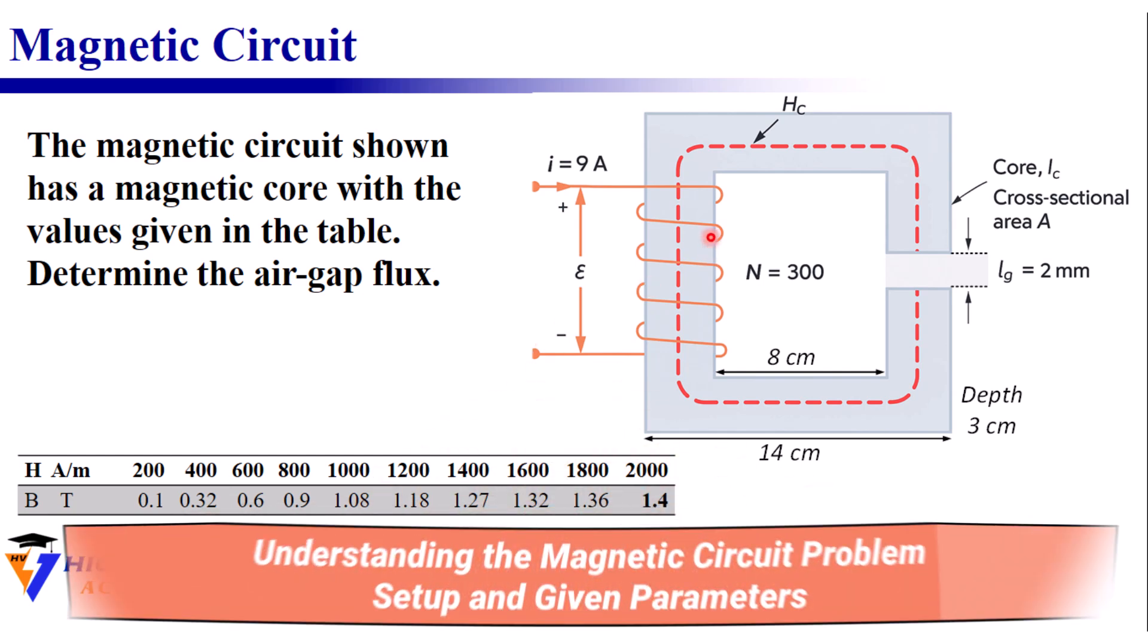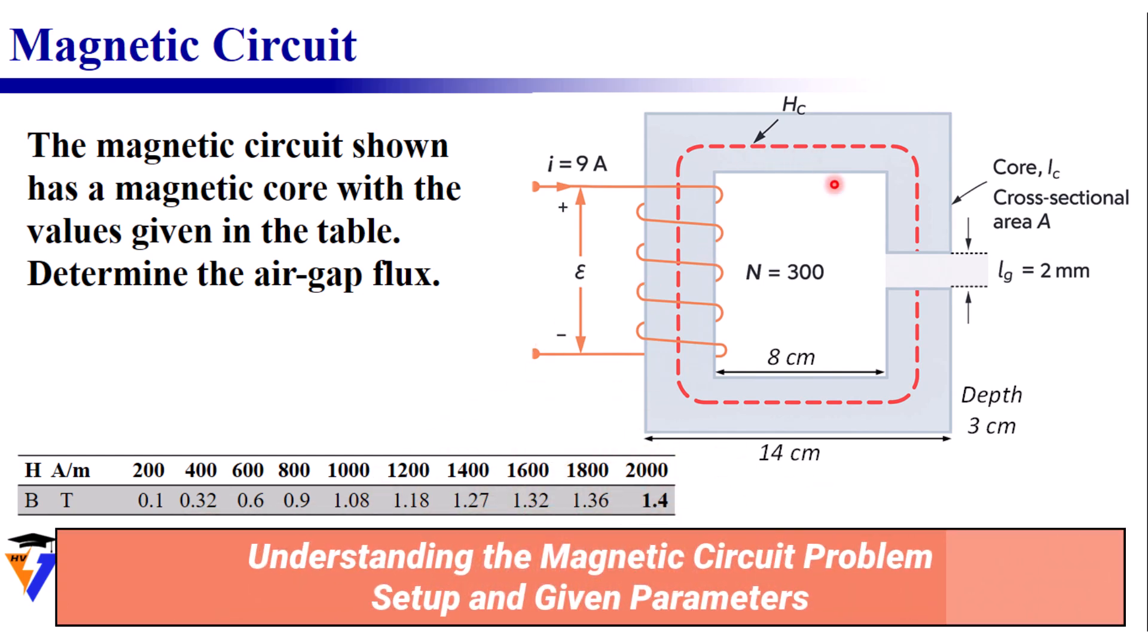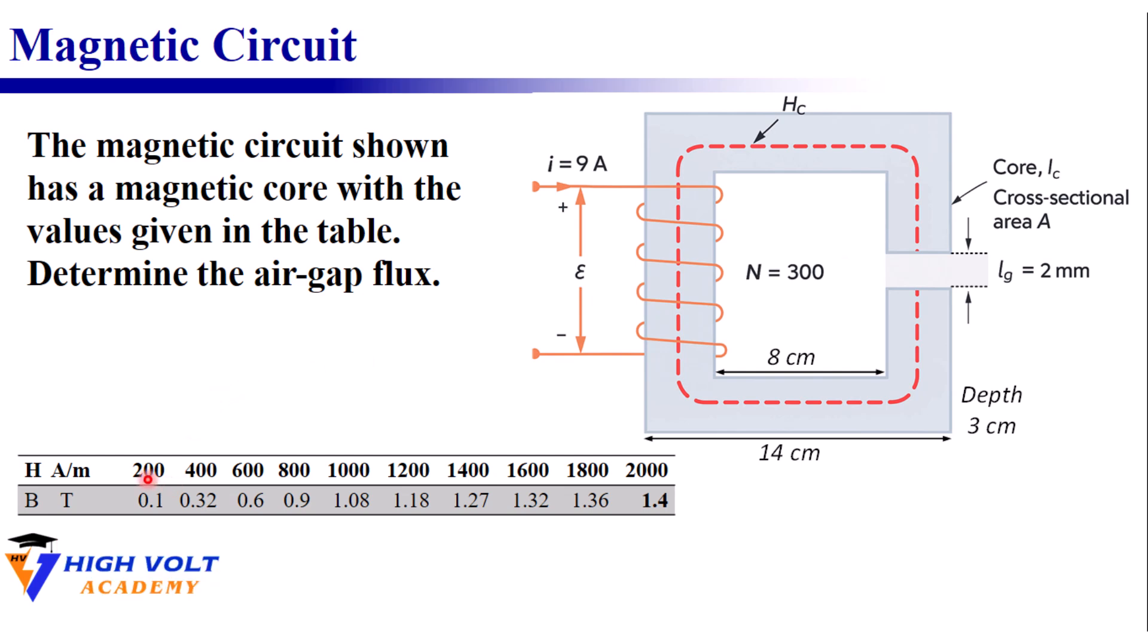The magnetic circuit shown has a magnetic core with values given in the table. The core is non-linear. The top row of the table shows the H field in ampere per meter and the bottom row shows the magnetic flux density B in tesla.